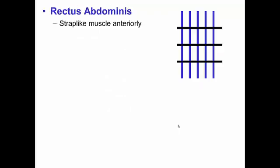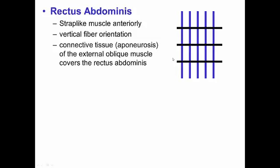And then finally we have our rectus abdominis. Our six pack is a strap-like muscle. It's the most superficial. The fibers are vertically oriented with these tendinous sheaths that bisect it, which is where your six pack comes from.